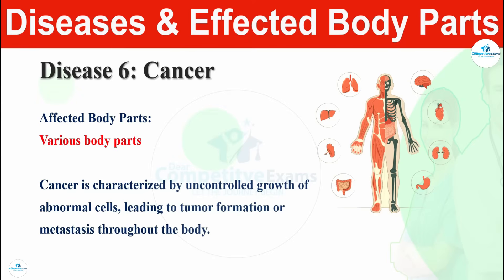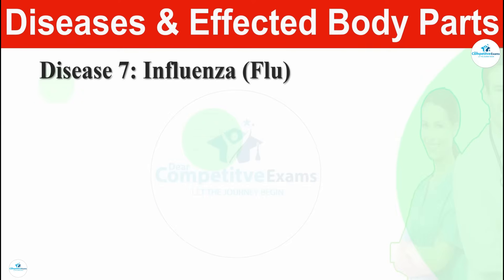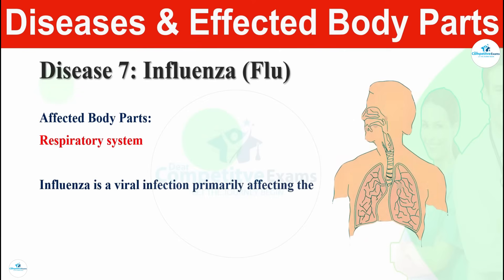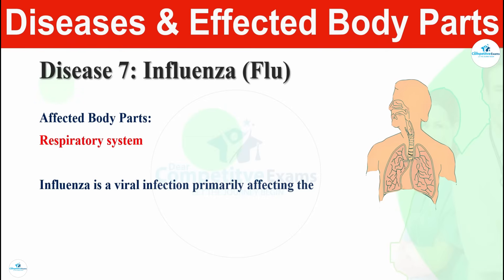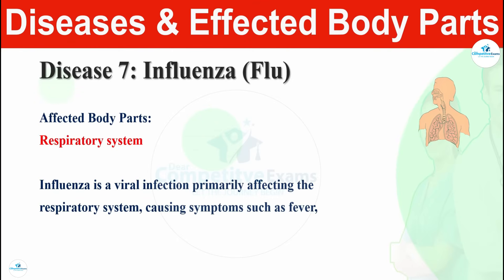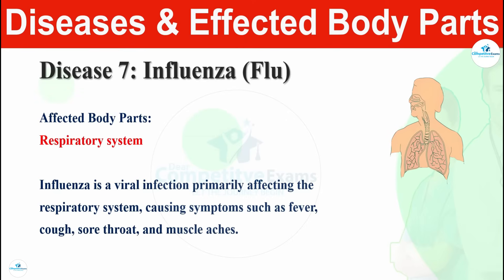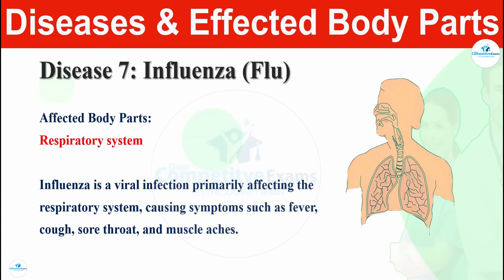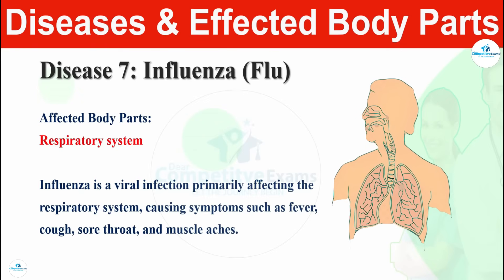Cancer affects any part of the body and leads to tumor formation. Disease number seven is influenza — the flu — and it affects the respiratory system. Influenza is a viral infection primarily affecting the respiratory system, causing symptoms such as fever, cough, sore throat, and muscle aches. The respiratory system can develop issues like fever, cough, throat problems, and muscle aches.